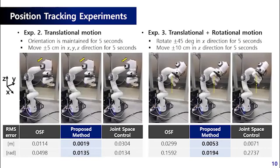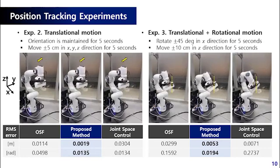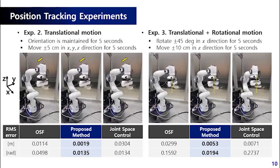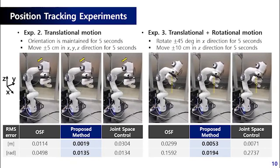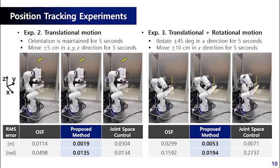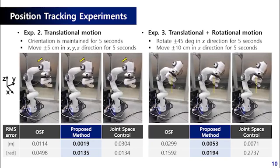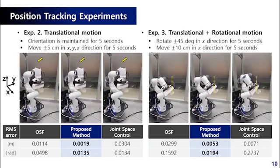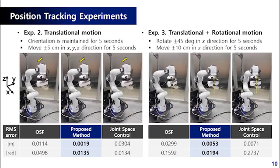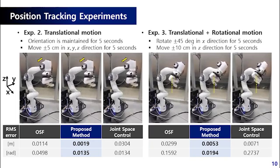Likewise, a translational motion was given in experiment 2, and both translational and rotational motion were given in experiment 3. Again, the RMS errors show that the tracking performance of the proposed method is similar to or better than that of joint space control. The OSF, which does not consider joint bandwidth, has the largest tracking errors as expected.